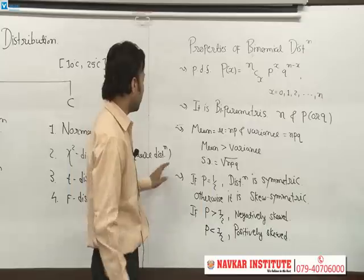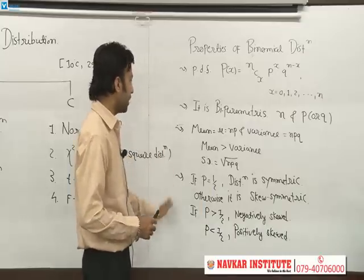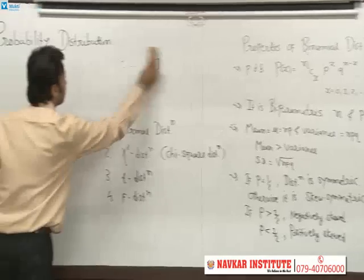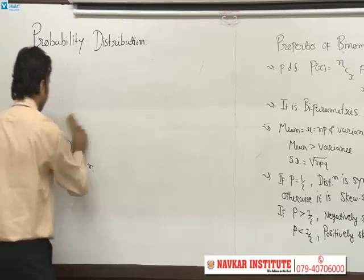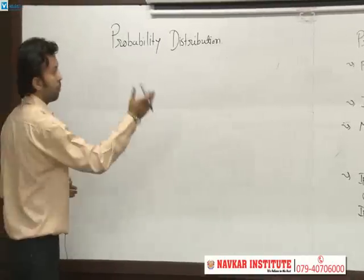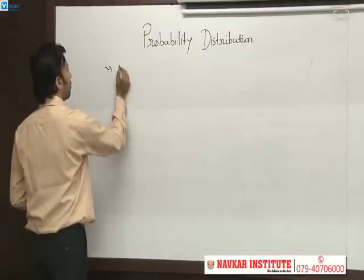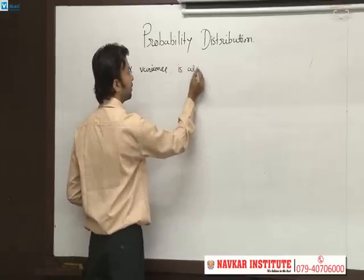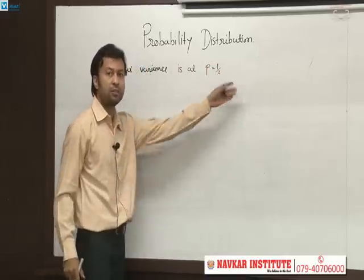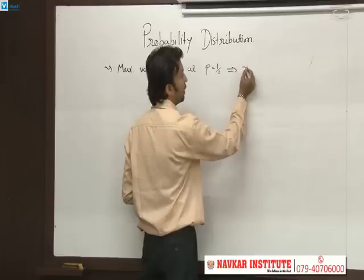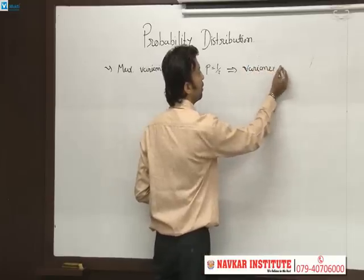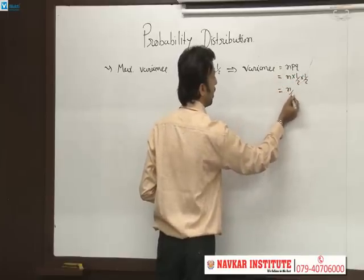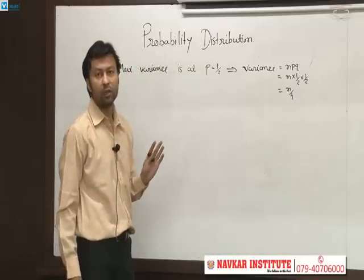Another property of binomial distribution is its maximum variance. The variance N·P·Q is maximum when P is equal to half. When P = 0.5, Q = 0.5 as well, so maximum variance equals N × 0.5 × 0.5 = N/4. So the formula for maximum variance is N/4.